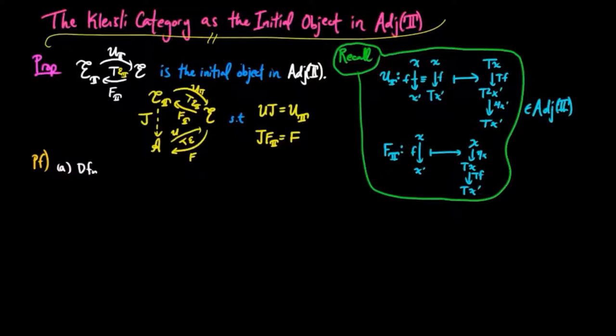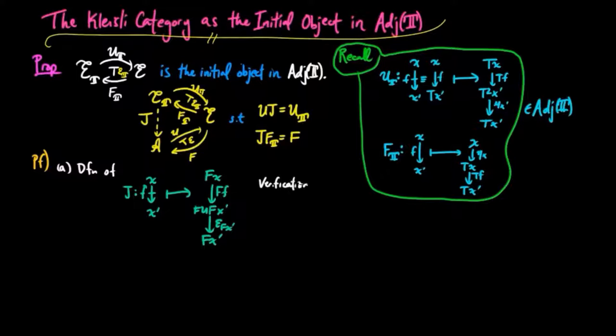To prove this, we define J. We take a morphism F in the Kleisli category to FF followed by the counit on FX'.